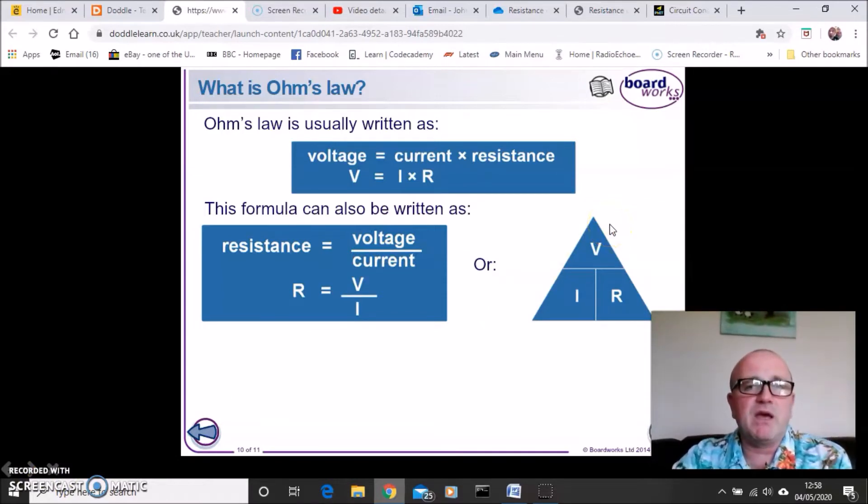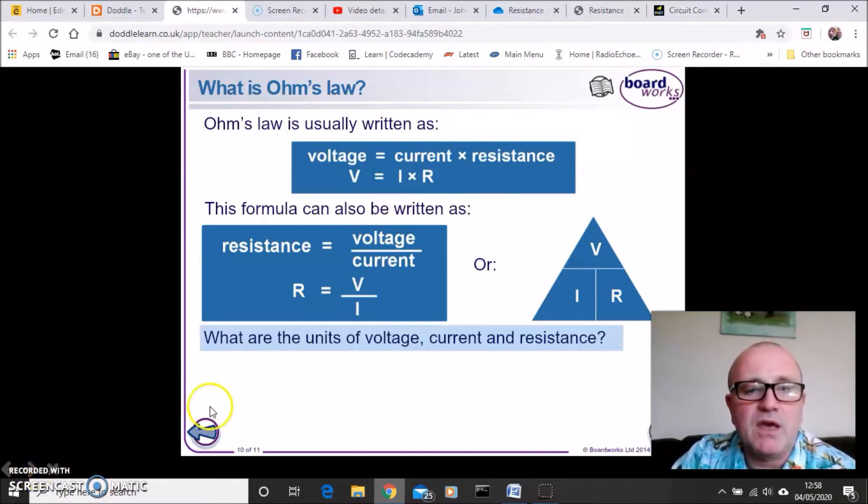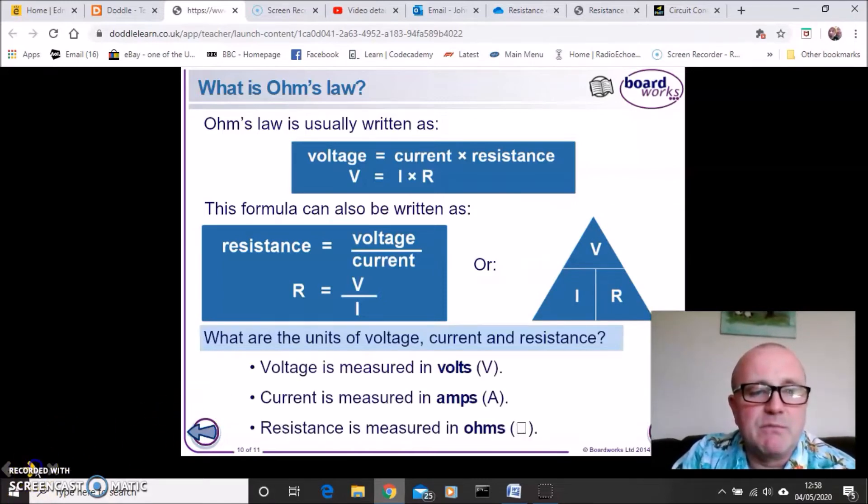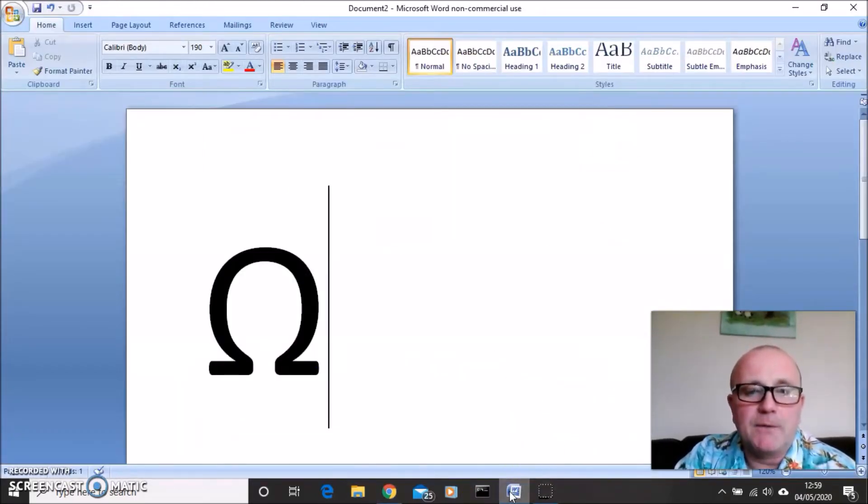Sometimes, and this is something we'll pick up on when we go back to school, we can put it into what's known as a magic triangle. And just a little reminder, the units of voltage or potential difference is volts. The units of current is amps or ampere and the units of resistance is ohms, which has that symbol omega.